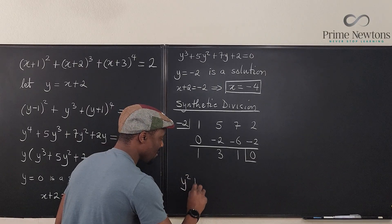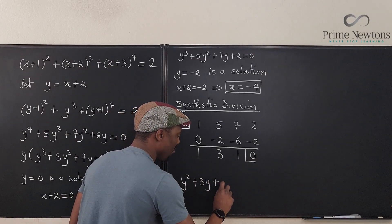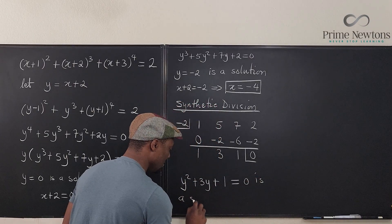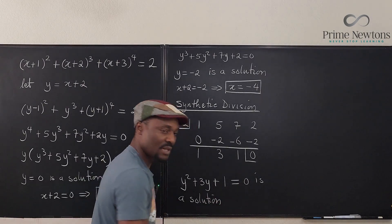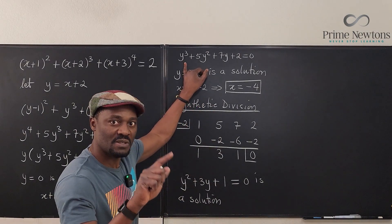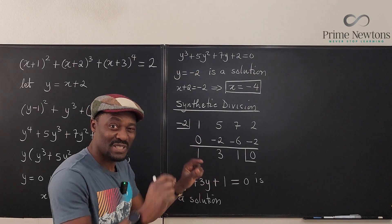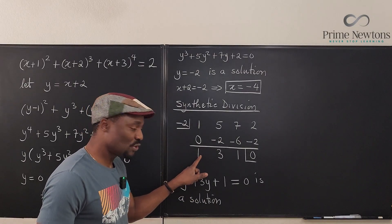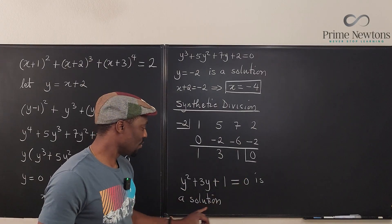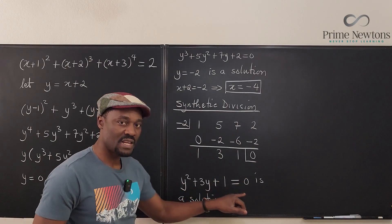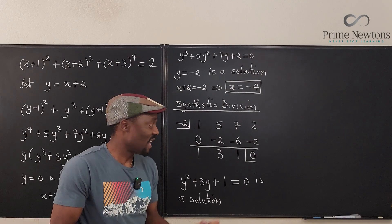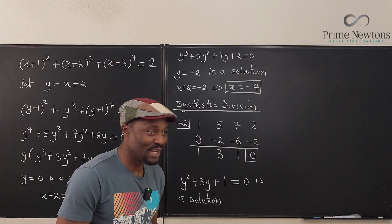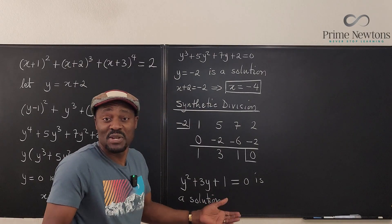So we have Y² + 3Y + 1 = 0 as the remaining equation. The degree dropped from 3 to 2 after the synthetic division because we found one of our answers. This quadratic cannot be factored easily, but we can use the quadratic formula.